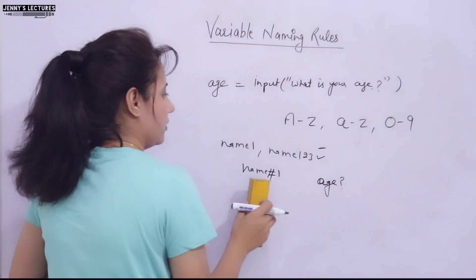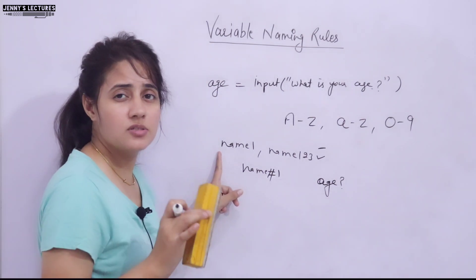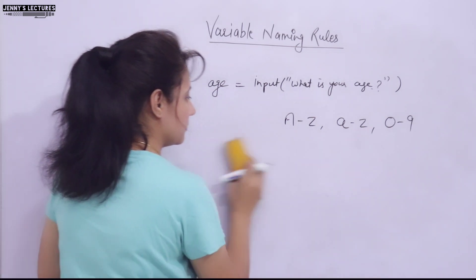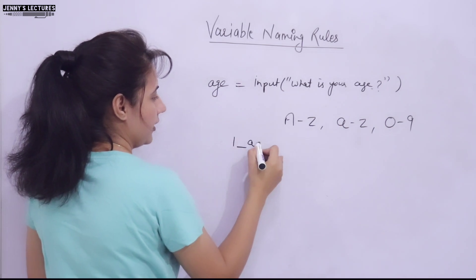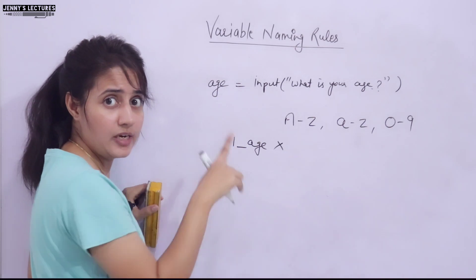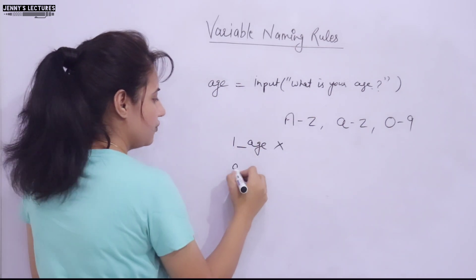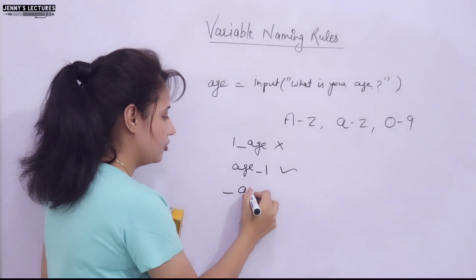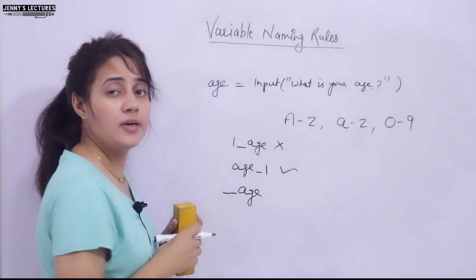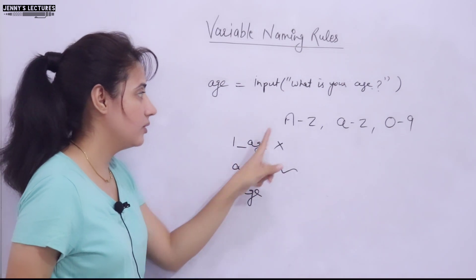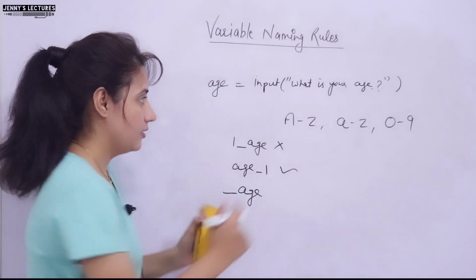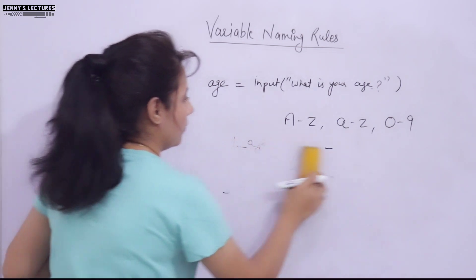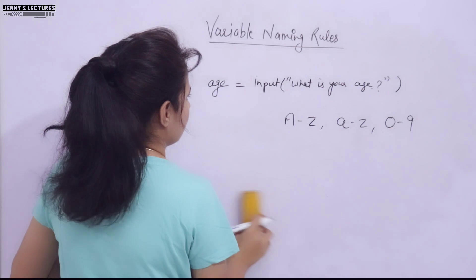The next rule is that a variable name must start either with a letter or an underscore. Something like '1_age' starting with a digit is invalid. 'age_1' starting with a letter is fine, and 'age' is also fine. So a variable name must start with either a small or capital letter, or an underscore — it cannot start with a digit.